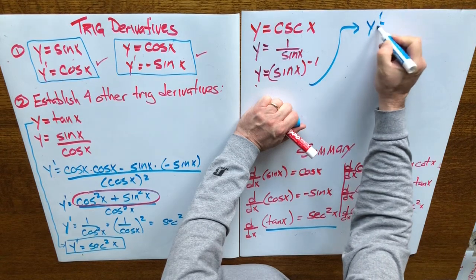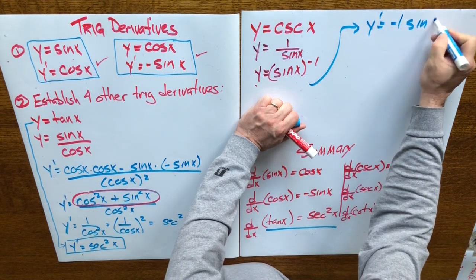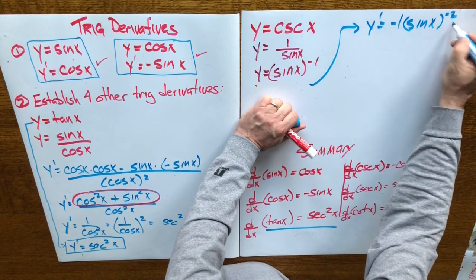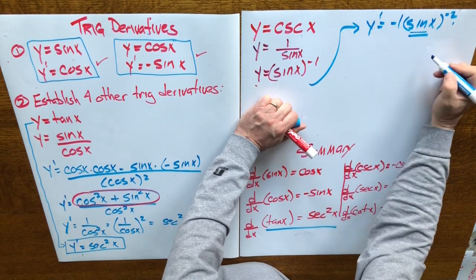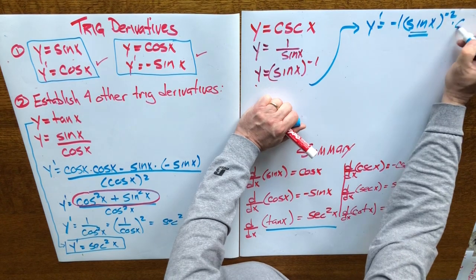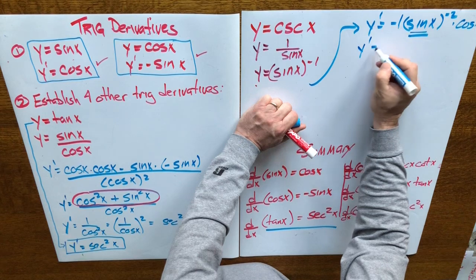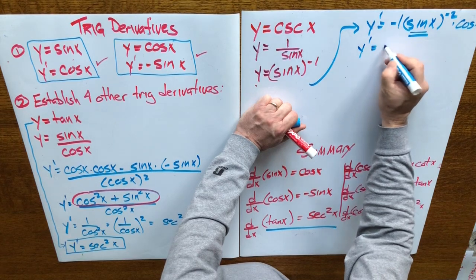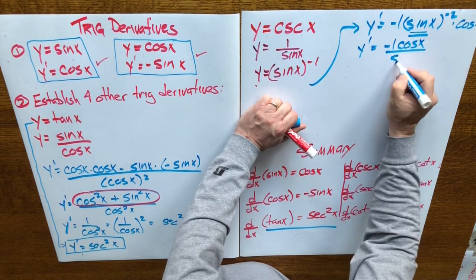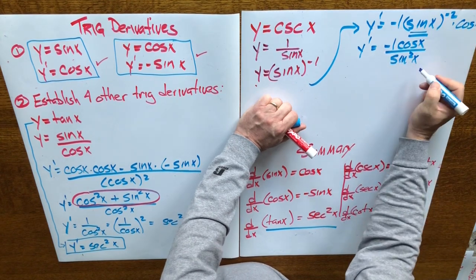Y prime is equal to negative 1 times sine of x to the minus 2, times the derivative of what's inside the brackets. The derivative of sine x is cosine x. So y prime equals negative cos x in the numerator, all over sine squared x in the denominator.